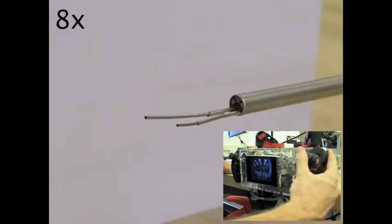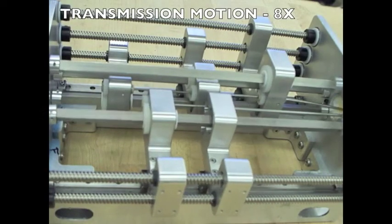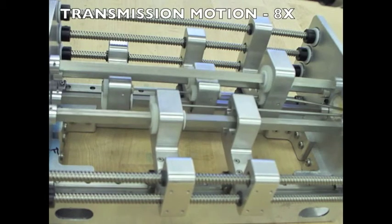In the transmission section, lead screws translate carriers, which move the tubes in and out, while square shafts transmit torque to each tube to provide rotation.